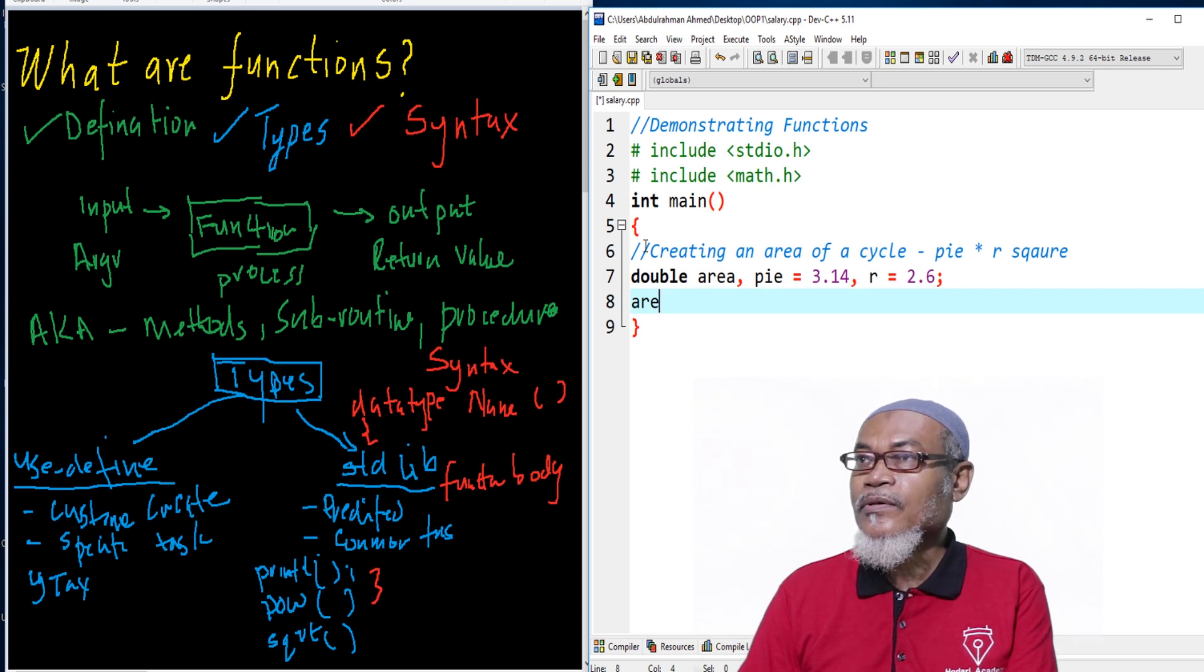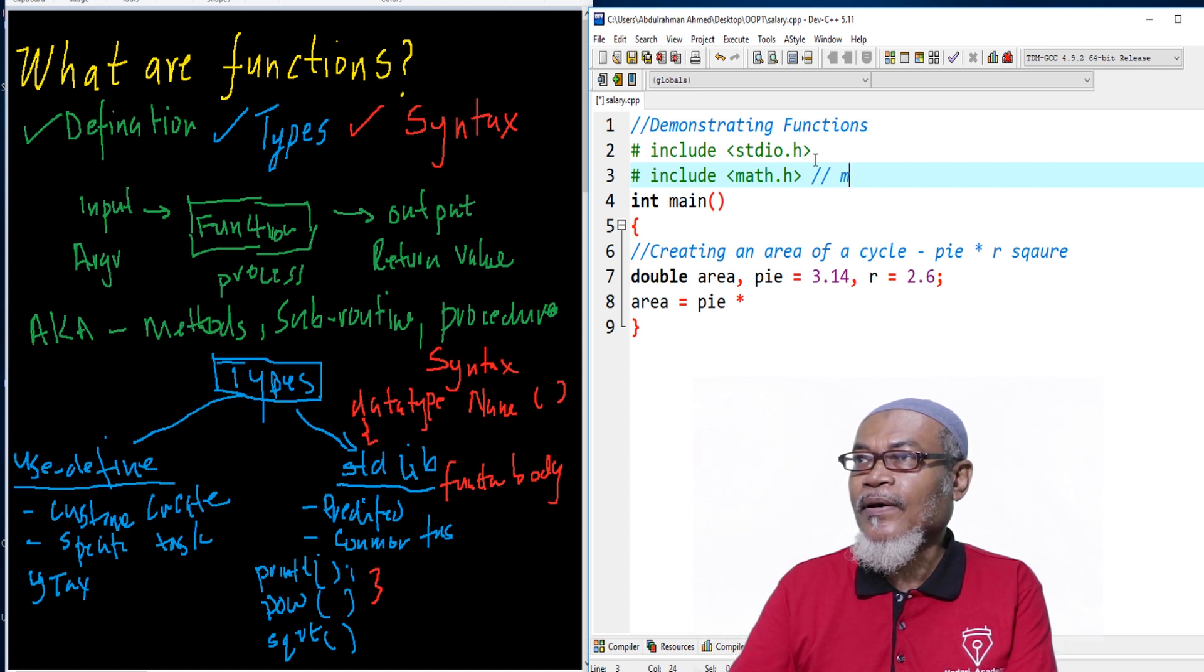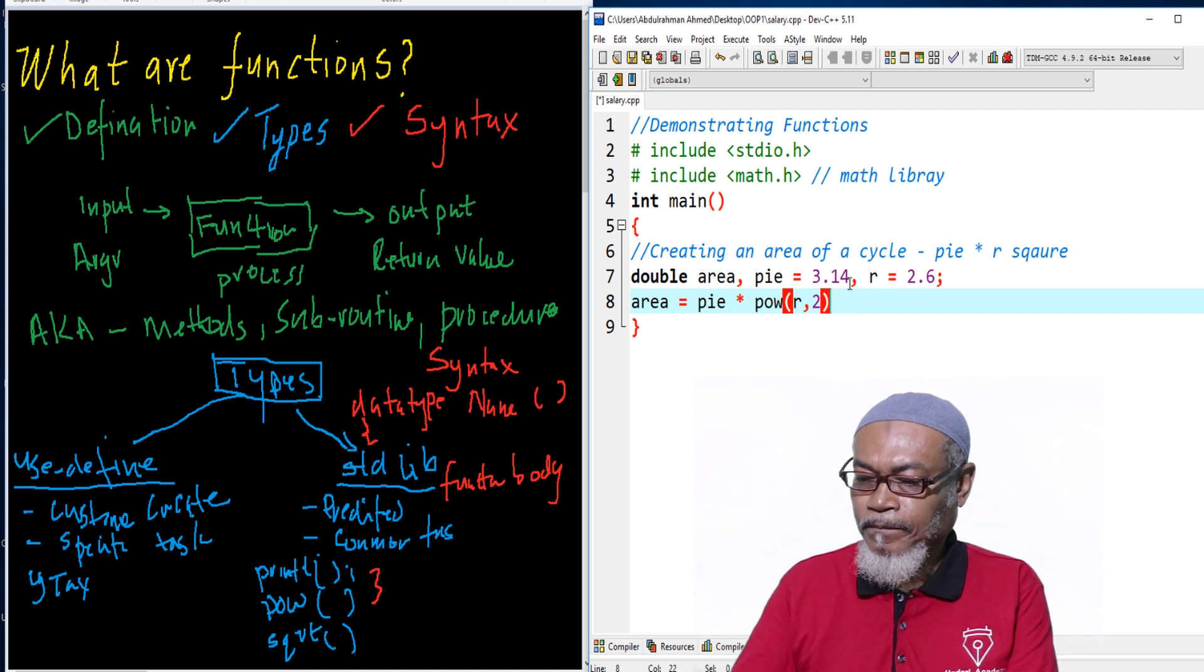Let's write up the formula. Area should be equals to pi times r square. But r square, how do you write up r square? We can use up the inbuilt function within the math library. Here we had to add the math library in order to access this particular function. It is power of what? R should be power of 2. This is the syntax. It takes up two operands, power of 2. It will be pi r square, which means power of 2.